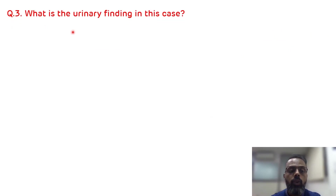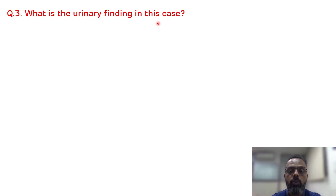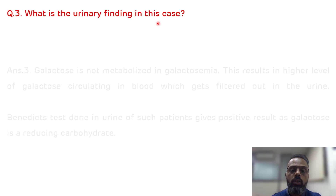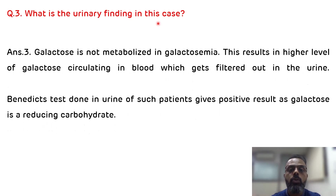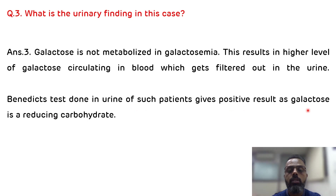Question three: what are the urinary findings? In galactosemia there is accumulation of galactose and galactose-1-phosphate, so there will be galactosemia and galactose will also be excreted in urine resulting in galactosuria. Since galactose is a reducing sugar, the Benedict test done on urine of such patients gives a positive result.